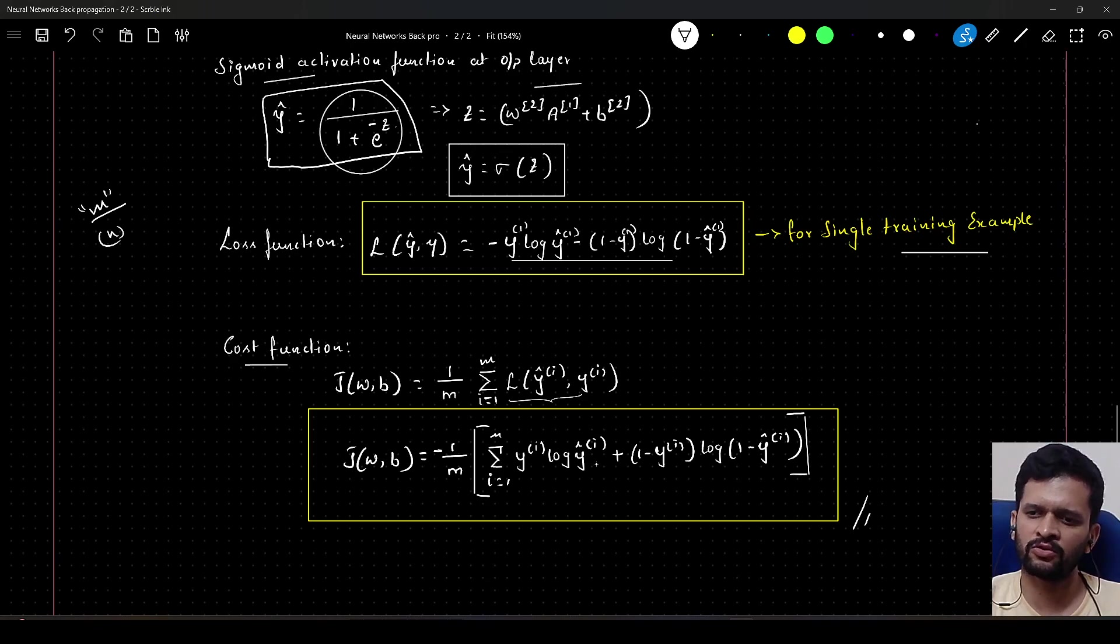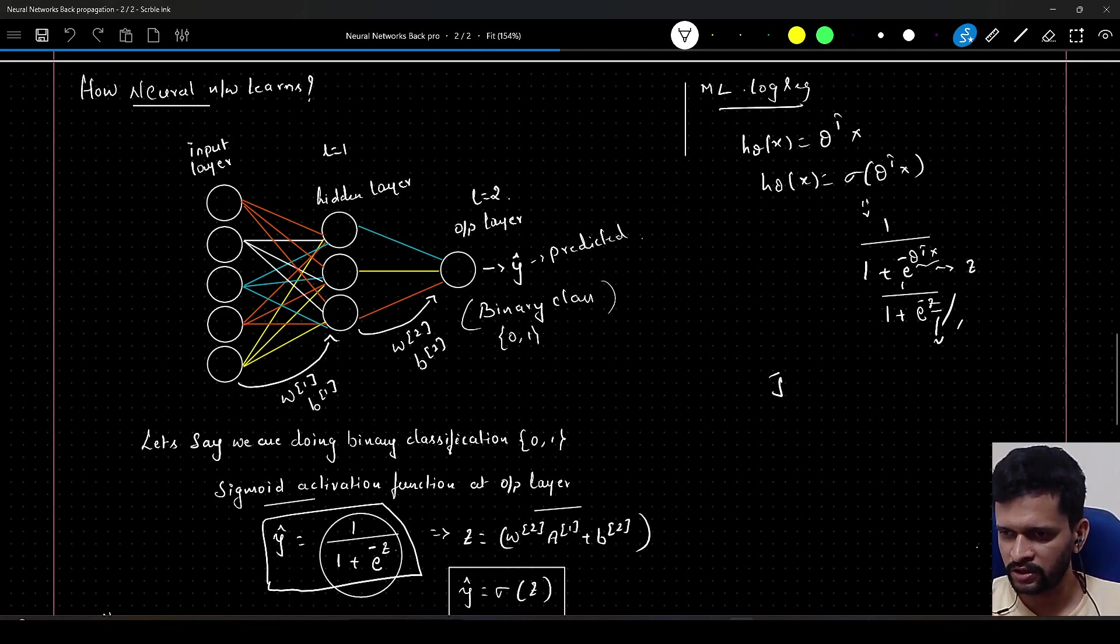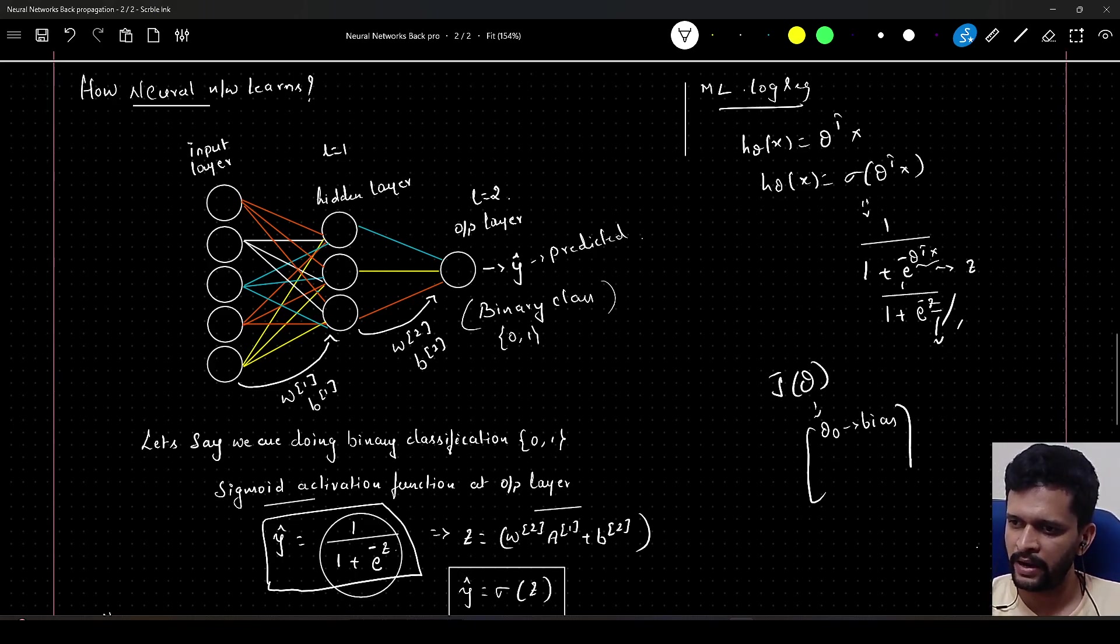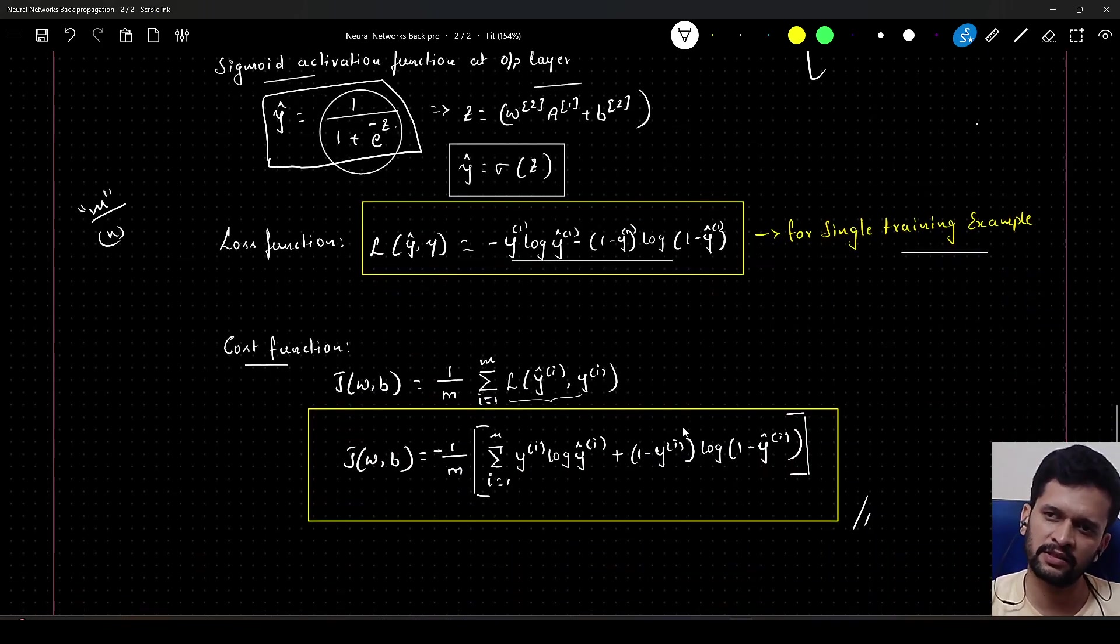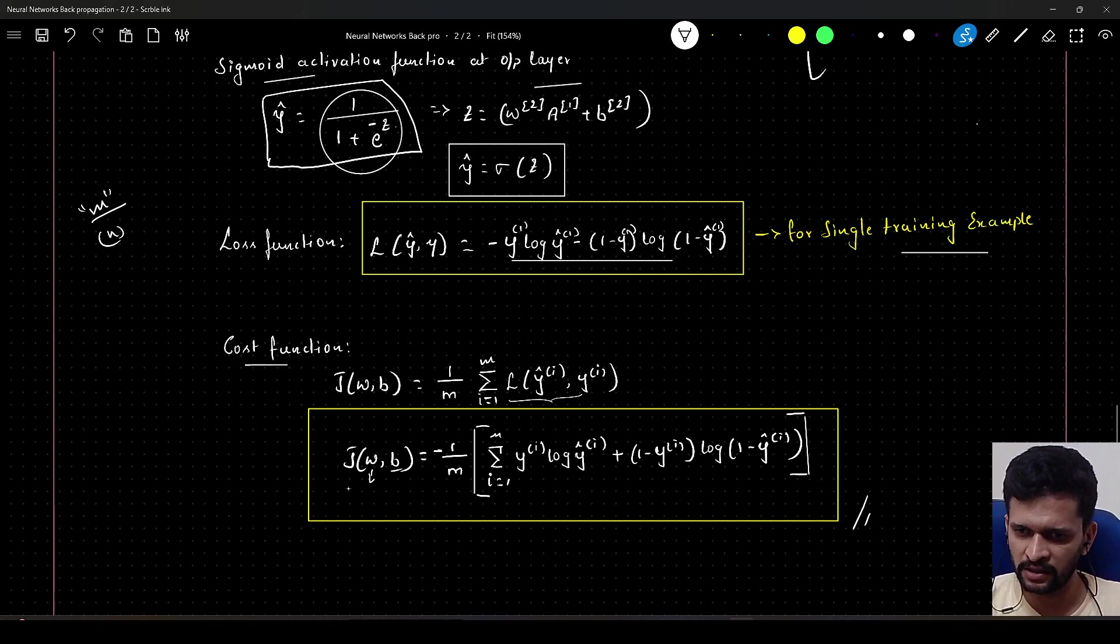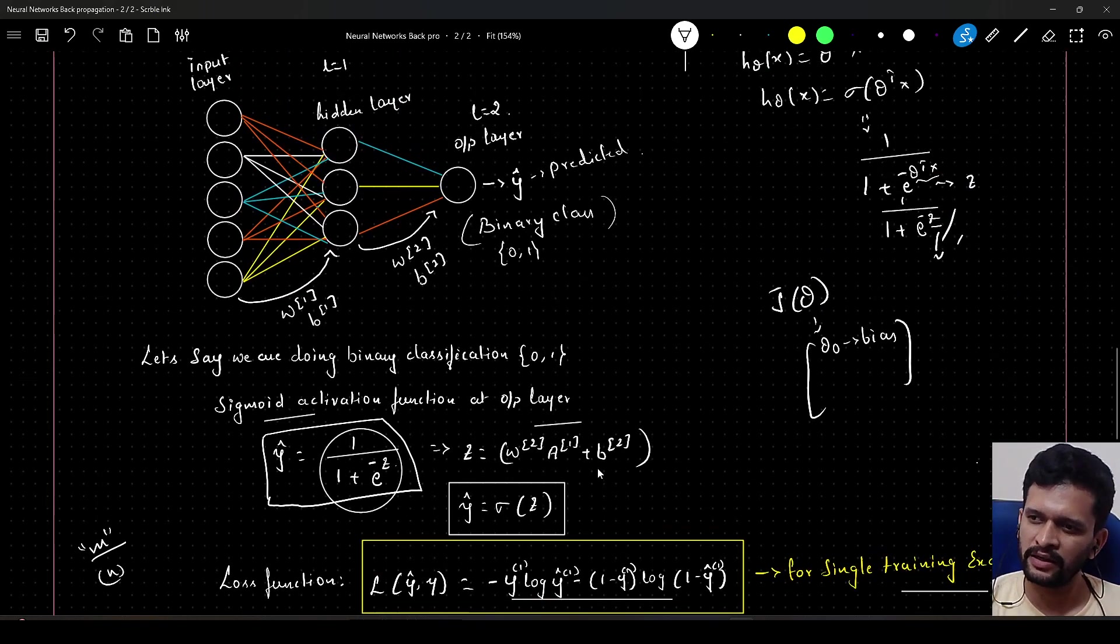Just in case of machine learning, we used to represent cost function with j theta, because theta had that theta 0 which is with respect to bias added within the parameters. But in case of neural networks, we are separating that bias and representing thetas with w. That is why instead of j of theta, we will represent j of w comma b as our cost function. This is what we have to minimize. In order to minimize this, we need to apply gradient descent.